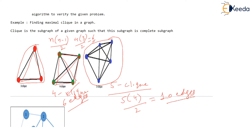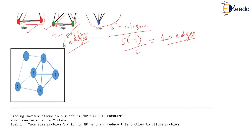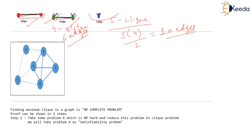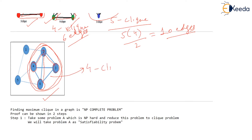All those examples were simple because the given graph itself was complete. Now let me explain what a clique means in a non-complete graph. Consider this graph — can you find a subgraph which is a complete graph? Yes, I am marking these four vertices: vertex 2 is connected to all other three vertices, vertex 4 is connected to all others, vertex 3 is connected to all others, and vertex 6 is connected to all others in this region. This is a subgraph of the graph and we say this portion is a four-clique.